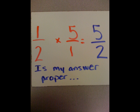Then, I need to multiply straight across. 1 times 5 is 5, and 2 times 1 is 2. But this looks funny because my numerator is larger than my denominator.